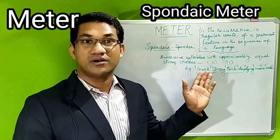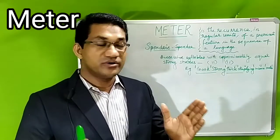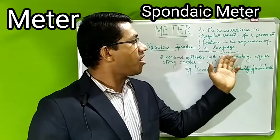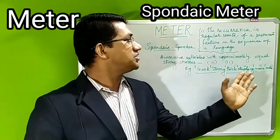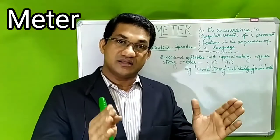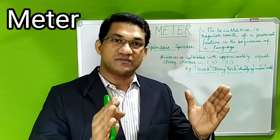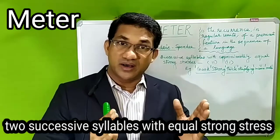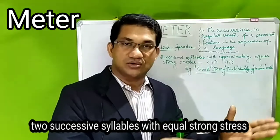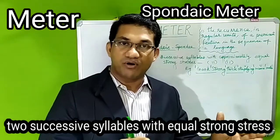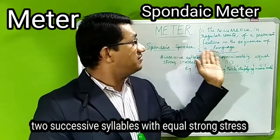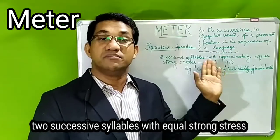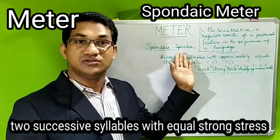We learn meter and we know what meter is. Meter is the recurrence in regular units of a prominent feature in the sequence of a language. In a line of poetry, you have a regular metrical arrangement — regular unstressed-unstressed or stressed-unstressed patterns. This kind of prominent feature repeatedly occurring in a line of poetry is meter, and today we learn a new meter.